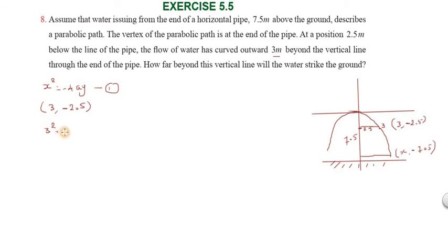So we have 3² = -4 × a × (-2.5). So 3 squared is 9 = -4 × (-2.5) × a. 10a, so a = 9/10. So with the a value, substitute into x² =